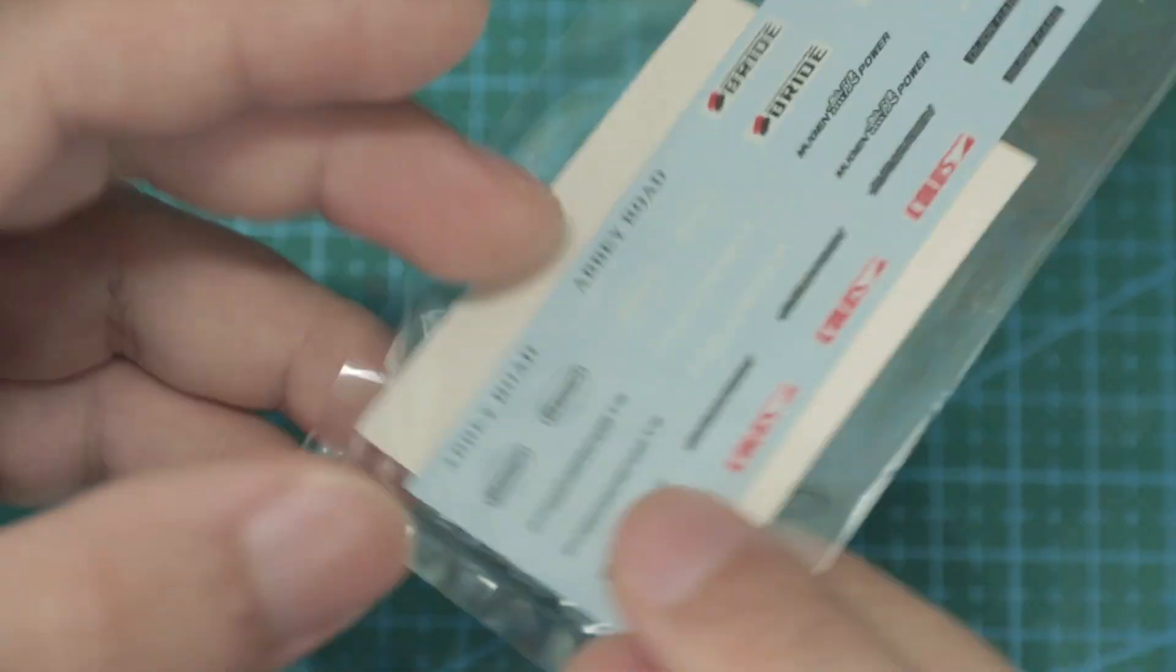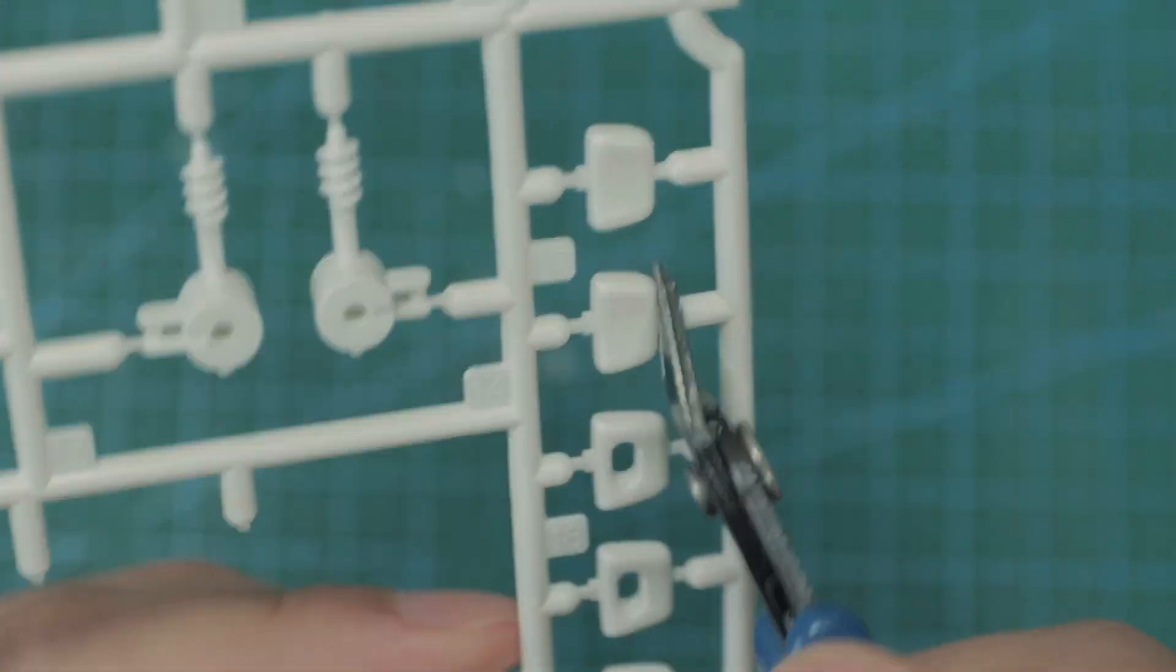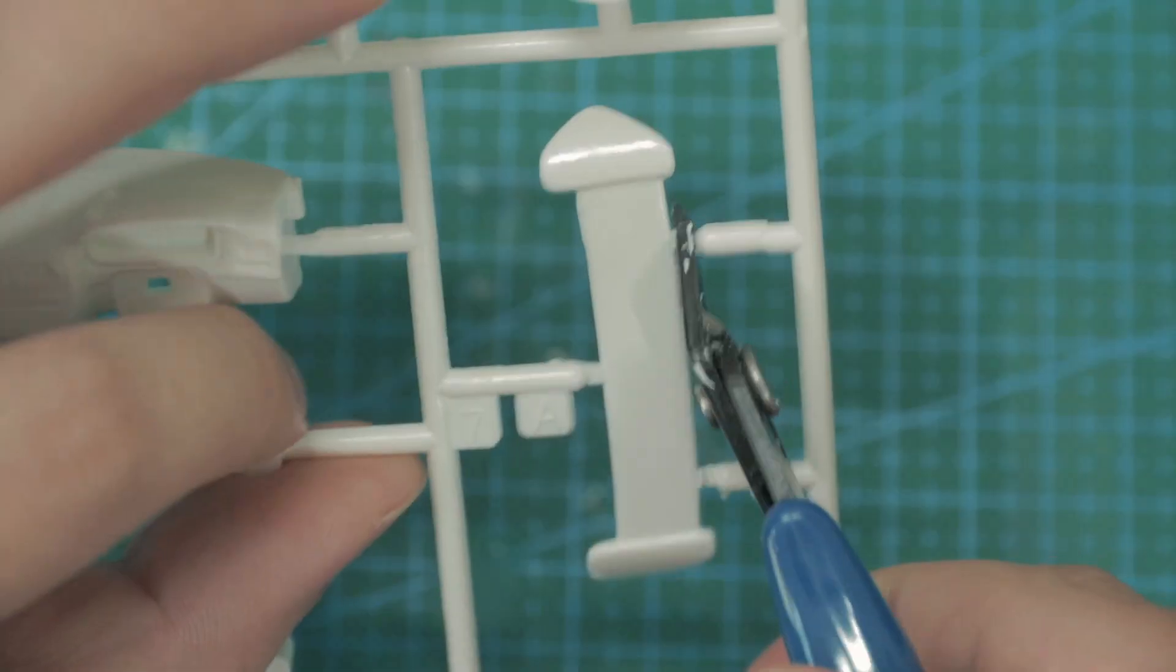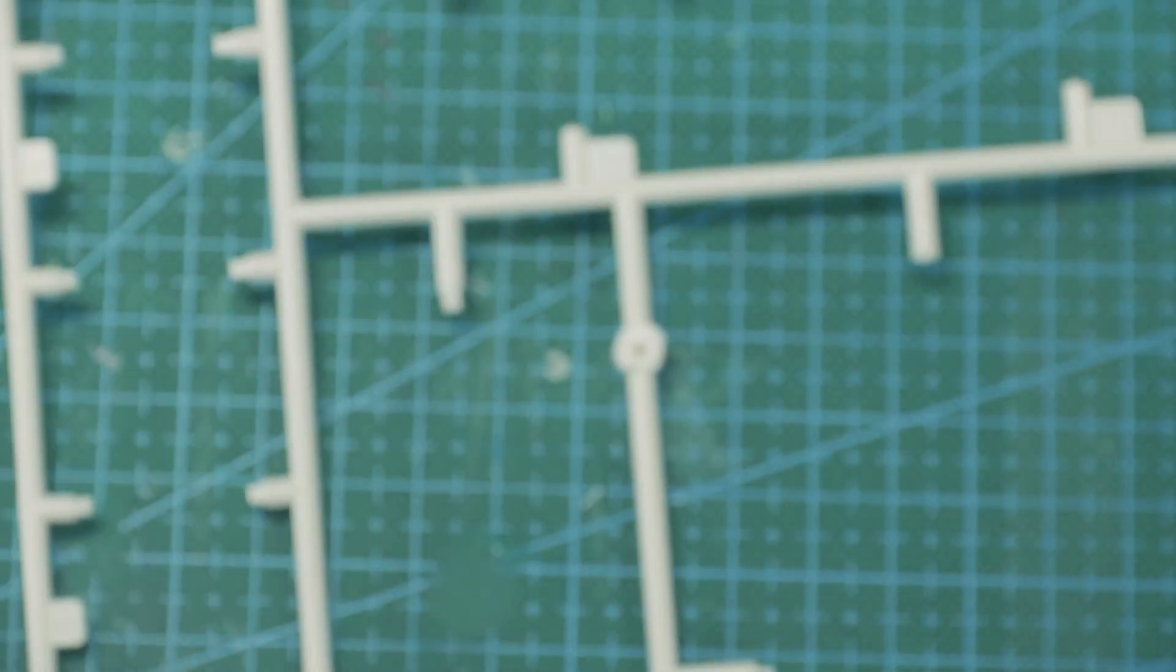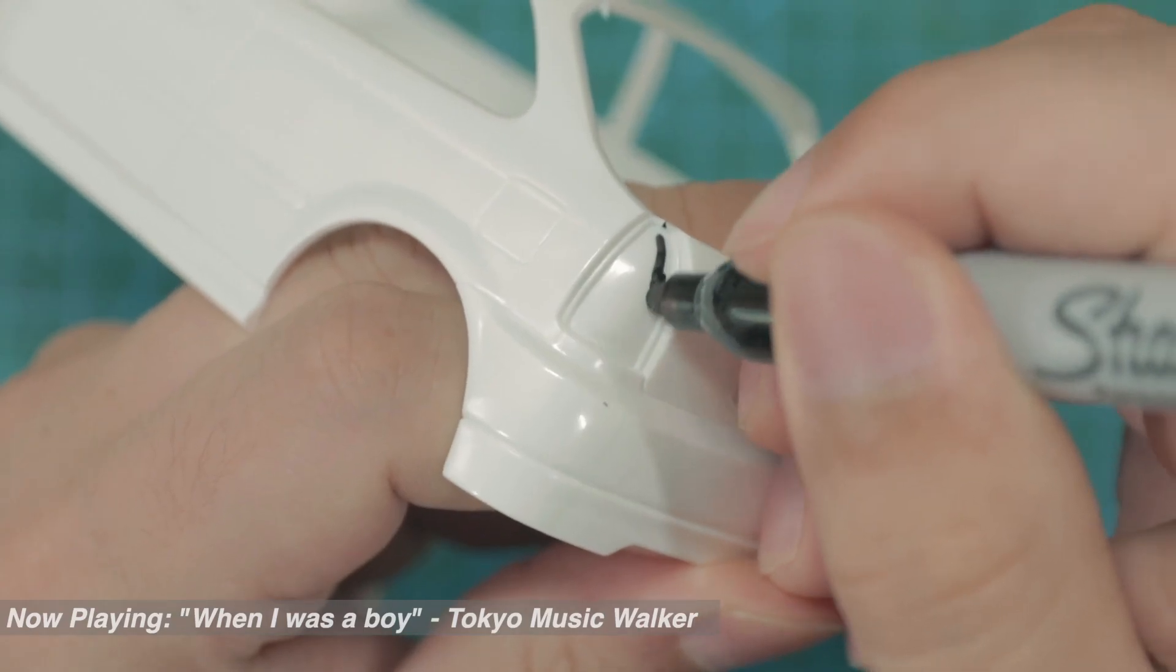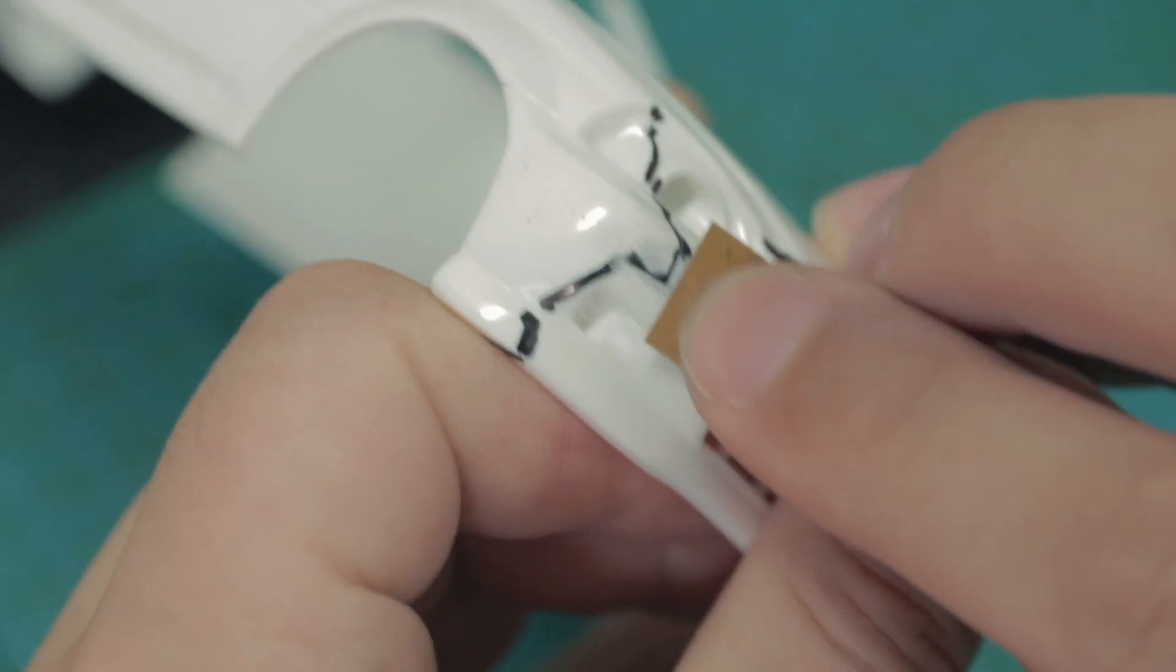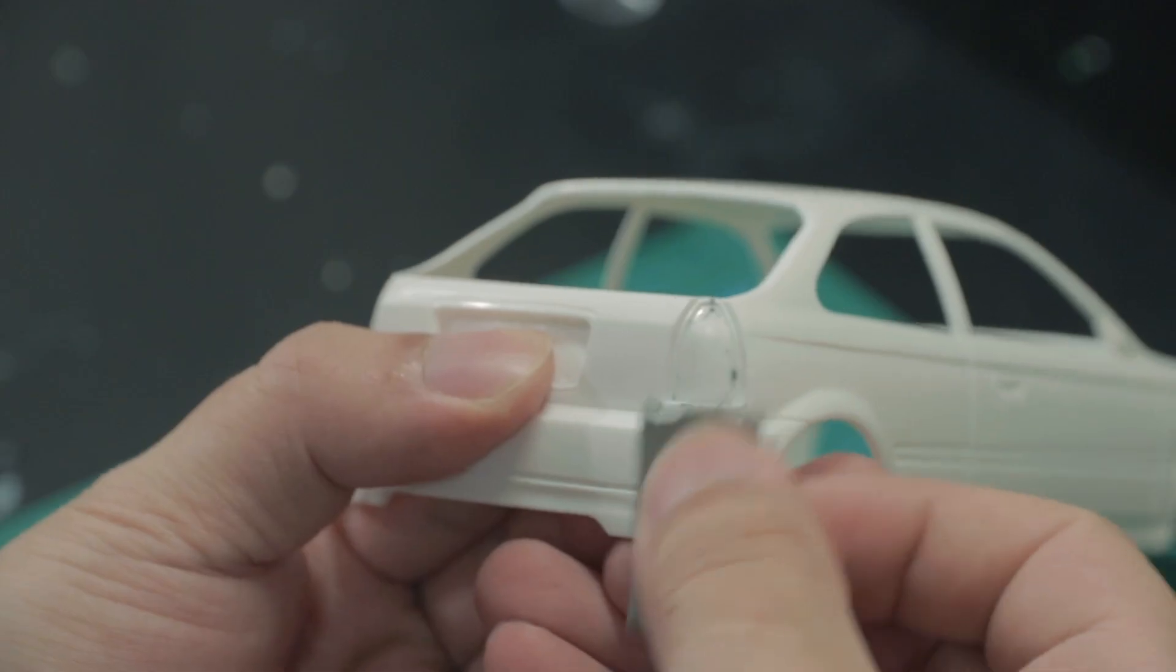After taking a good look at the parts, it's time to cut them off the sprue. I mark and remove the mold lines with 600 grit sandpaper, followed by sanding the entire body with 1000 grit.